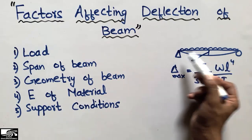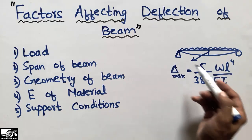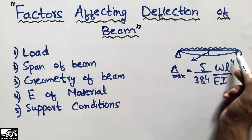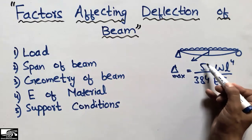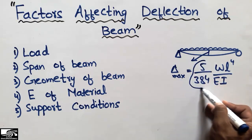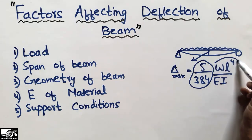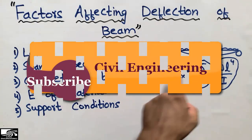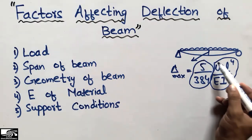For each case of the beam, according to the support condition and different types of beam, the maximum deflection formula changes. For a simply supported beam having a uniformly distributed load, the maximum deflection formula is: Δ_max = 5/384 × WL⁴ / EI. The constant changes according to the type of beam, but the key factors W, L, E, and I remain the same for every type.